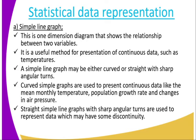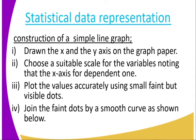A simple line graph may be either curved or straight with sharp, angular turns. Curved simple line graphs are used to present continuous data, like the mean monthly temperature, population growth rate, and changes in air pressure. Straight simple line graphs with sharp, angular turns are used to present data which may have some discontinuity.